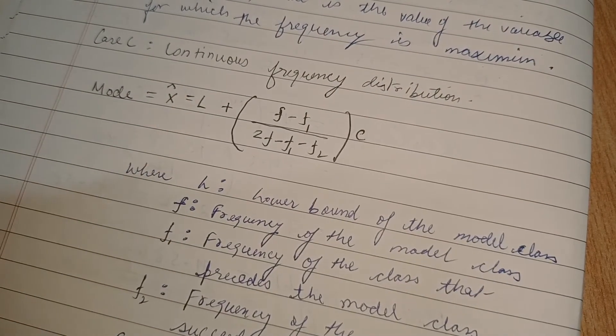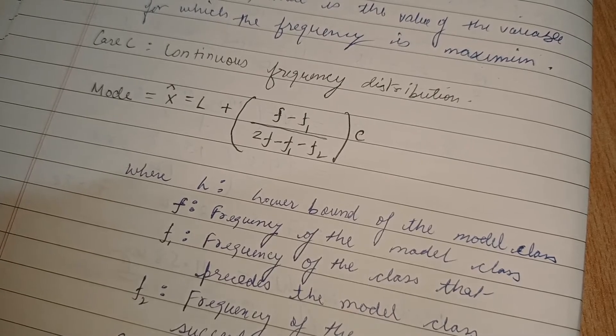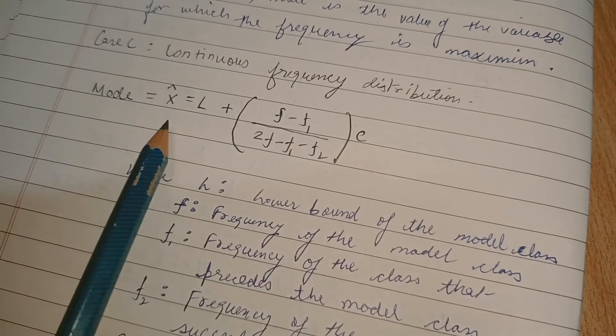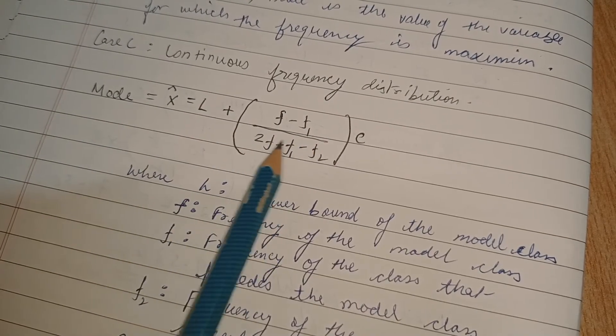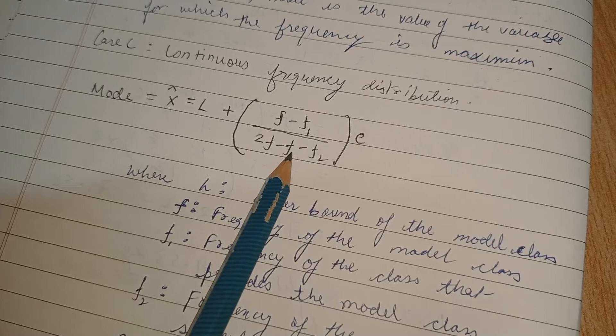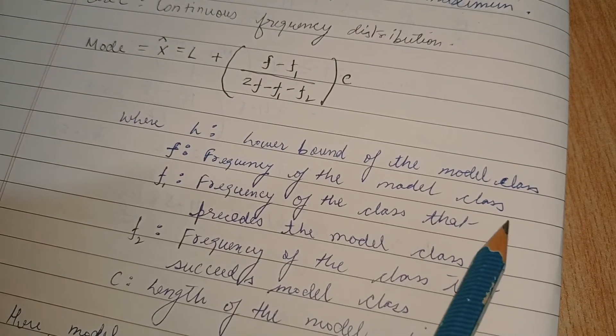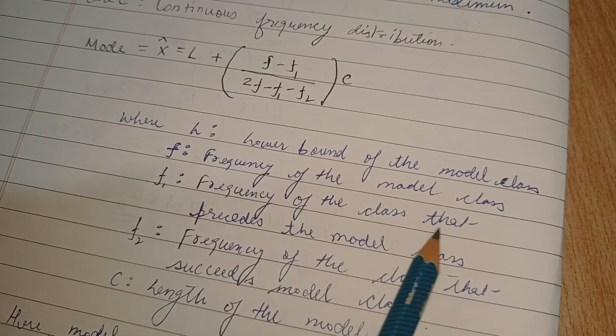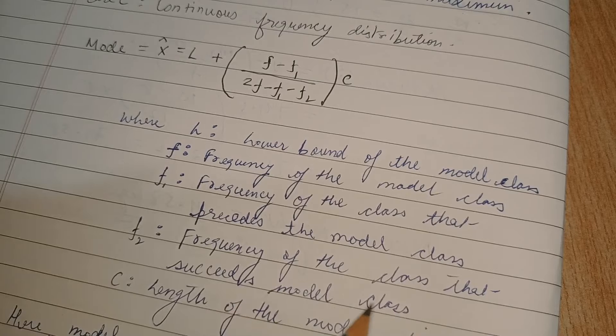Most important is the third type. We would also be seeing the other two types in problem solving. Continuous frequency distribution mode equals l plus (f minus f1) divided by (2f minus f1 minus f2) into c. Here l is lower bound of the model class, f is the frequency of the model class, f1 is the frequency of the class that precedes the model class, f2 is the frequency of the class that succeeds the model class.